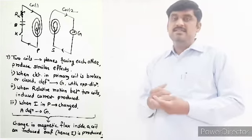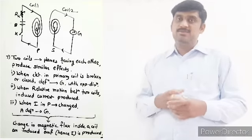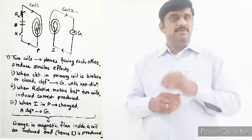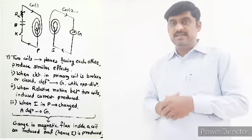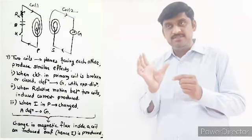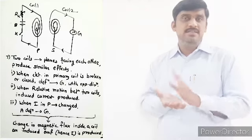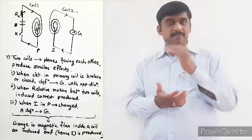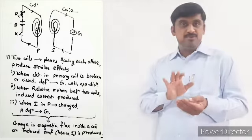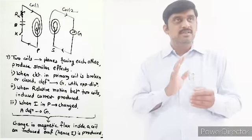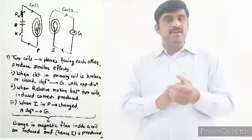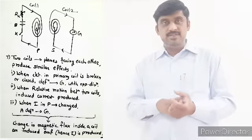The third observation is: when we change the current in the primary coil — for example, by using a rheostat to increase or decrease the supply — the magnetic field of the primary coil changes. This changing magnetic field induces current in the secondary coil. So in all three cases, the common factor is the change in magnetic field.